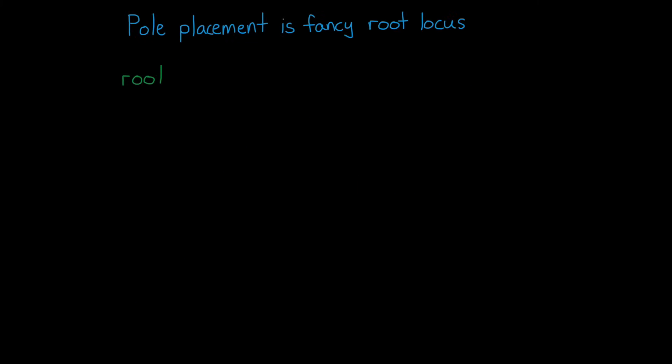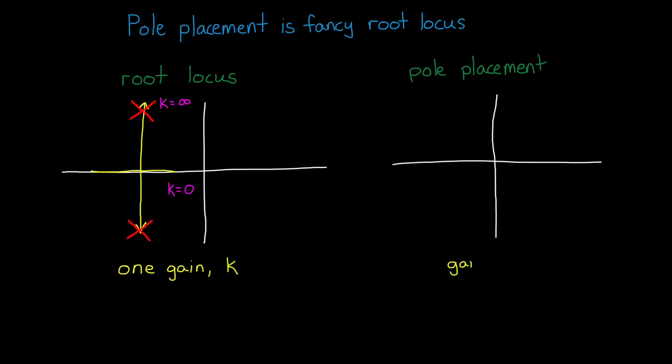Pole placement is like fancy root locus. With root locus, you have one gain that you can adjust that can only move the poles along the locus lines. But with pole placement, we have a gain matrix that gives us the ability to move the poles anywhere in the complex plane, not just along single dimensional lines.